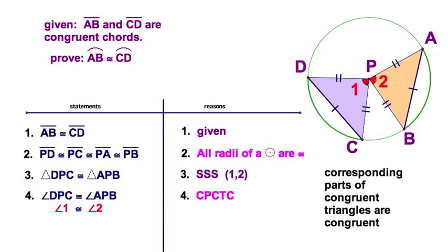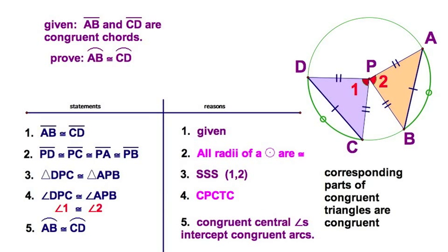We'll come to our conclusion, which says that the two arcs, and that would be AB, is congruent to arc CD. And the reason is that if congruent central angles are congruent, then their intercepted arcs are congruent.